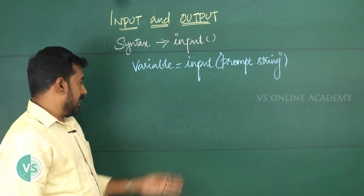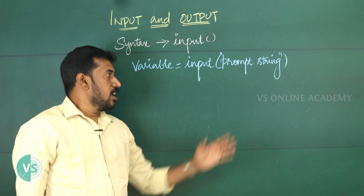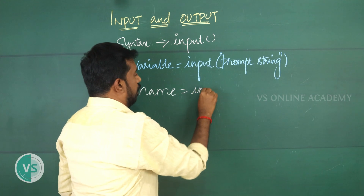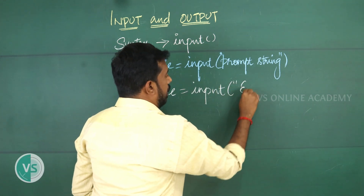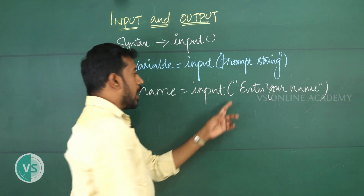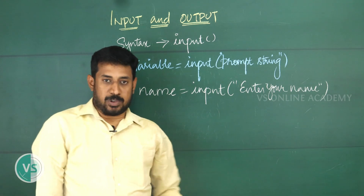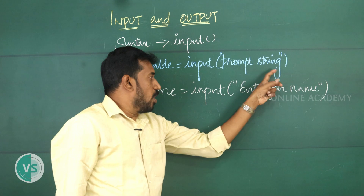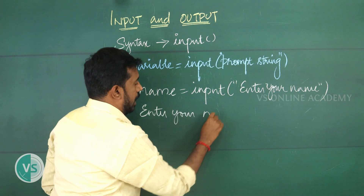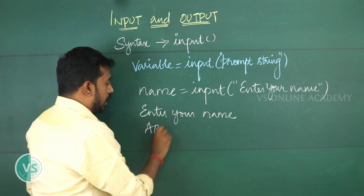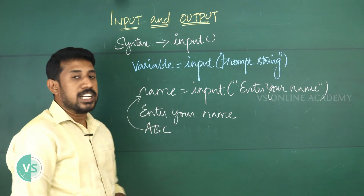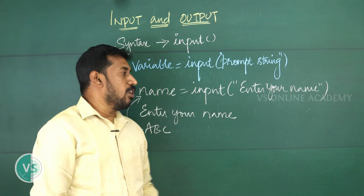Look at the syntax for the input function: variable = input(prompt_string). The prompt string is a message shown to the user — for example, name = input('Enter your name'). It prompts the user during runtime. Whatever the user enters will be assigned to the variable name.